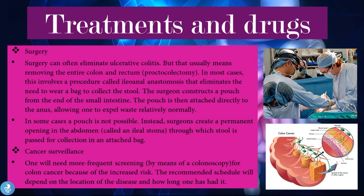Surgery can often eliminate ulcerative colitis, but usually means removing the entire colon and rectum in a procedure called a proctocolectomy. In most cases this involves an ileoanal anastomosis, eliminating the need to wear a bag — the surgeon constructs a pouch from the end of the small intestine, attached directly to the anus, allowing relatively normal waste expulsion. In some cases a pouch is not possible, and surgeons create a permanent opening in the abdomen called an ileal stoma, through which stool is passed into an attached bag. Cancer surveillance via more frequent colonoscopy is needed due to the increased risk of colon cancer.